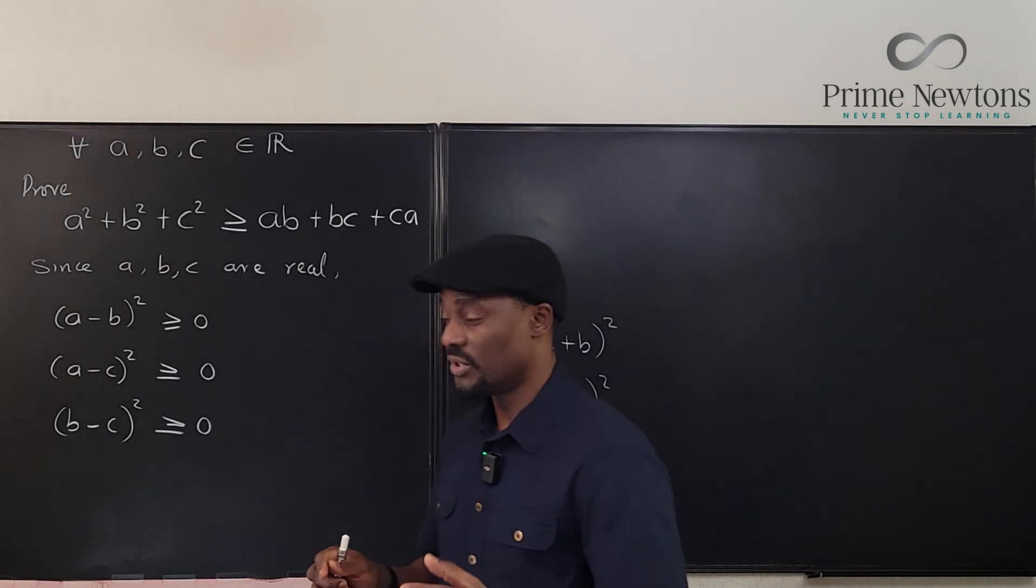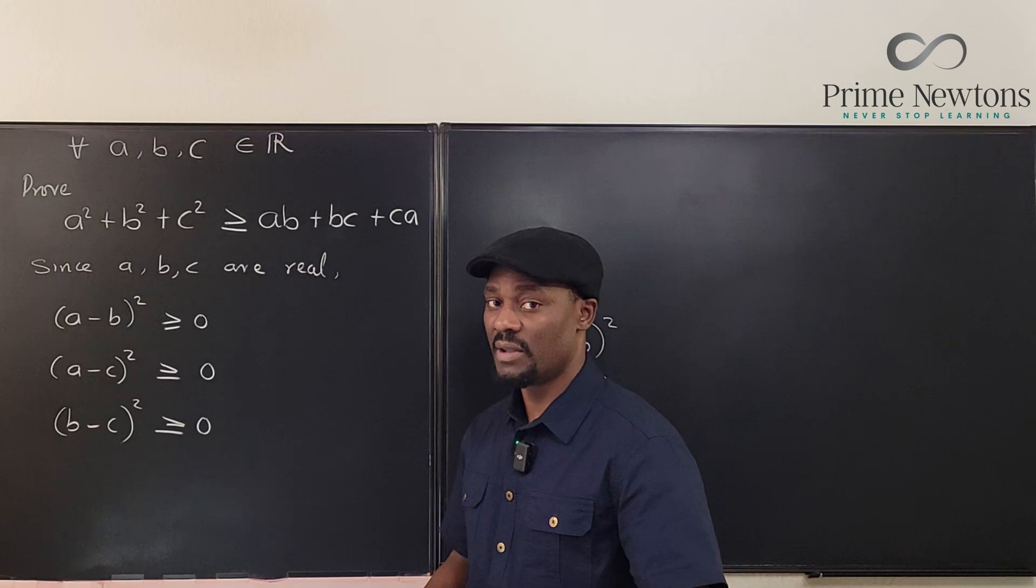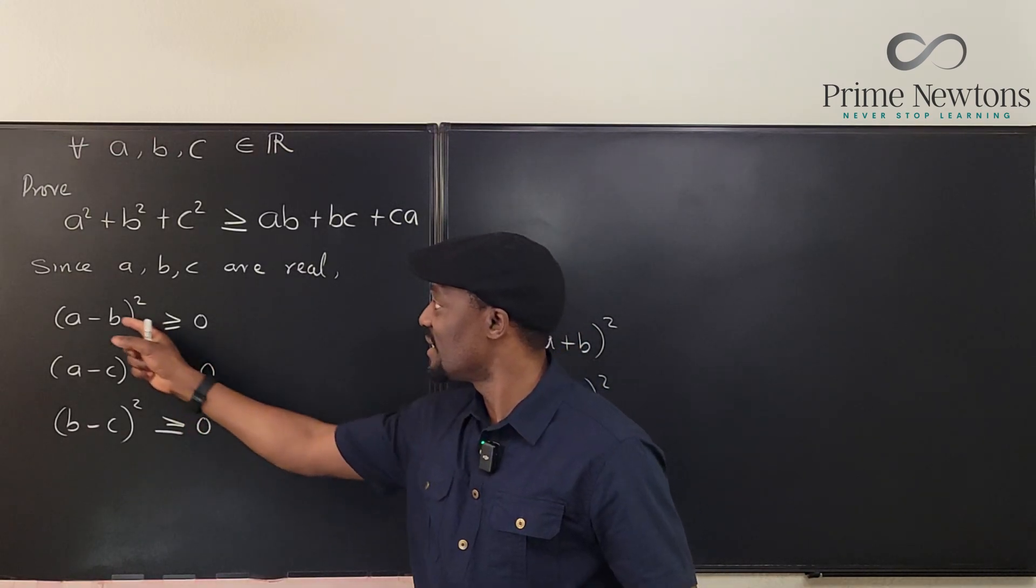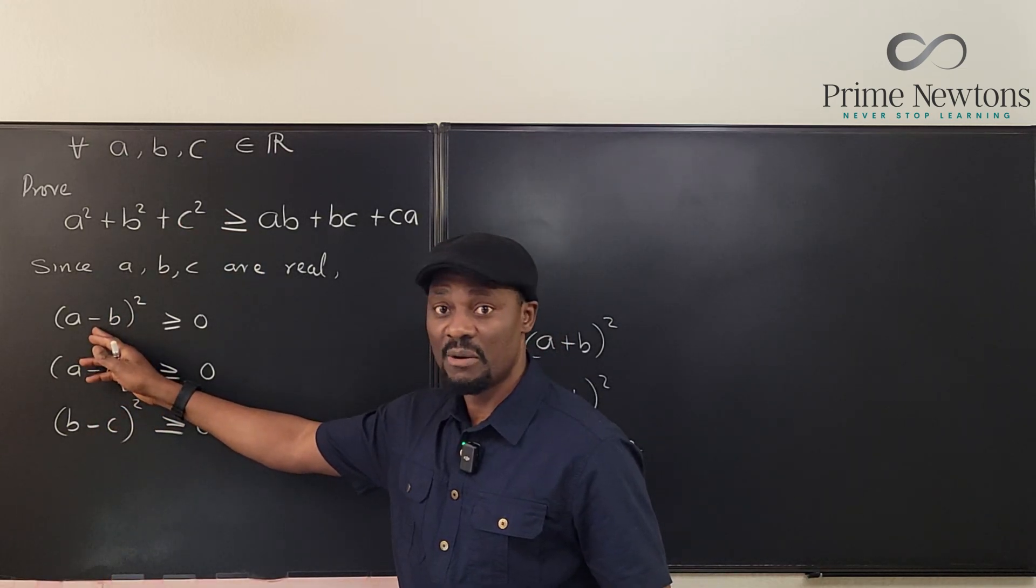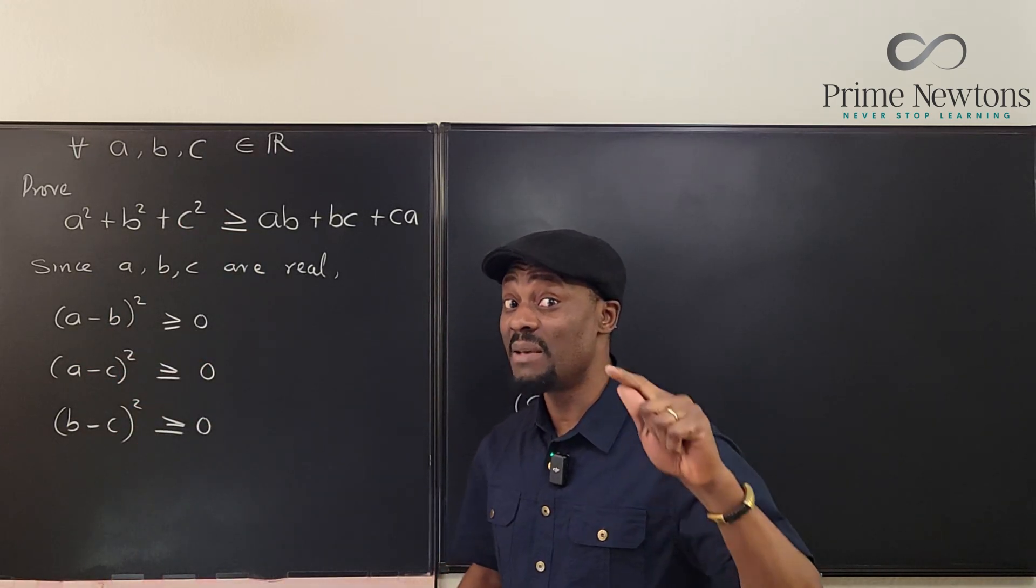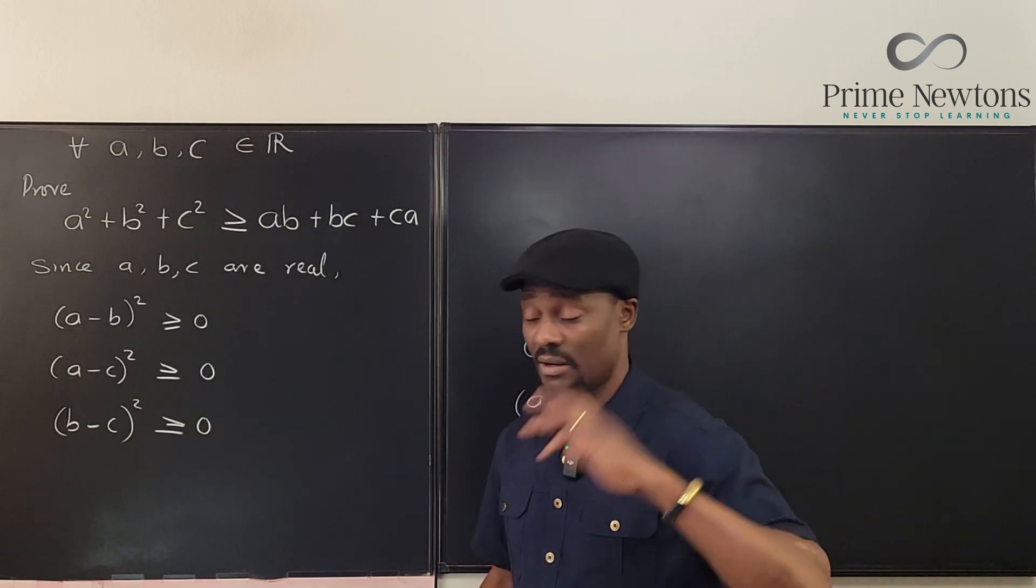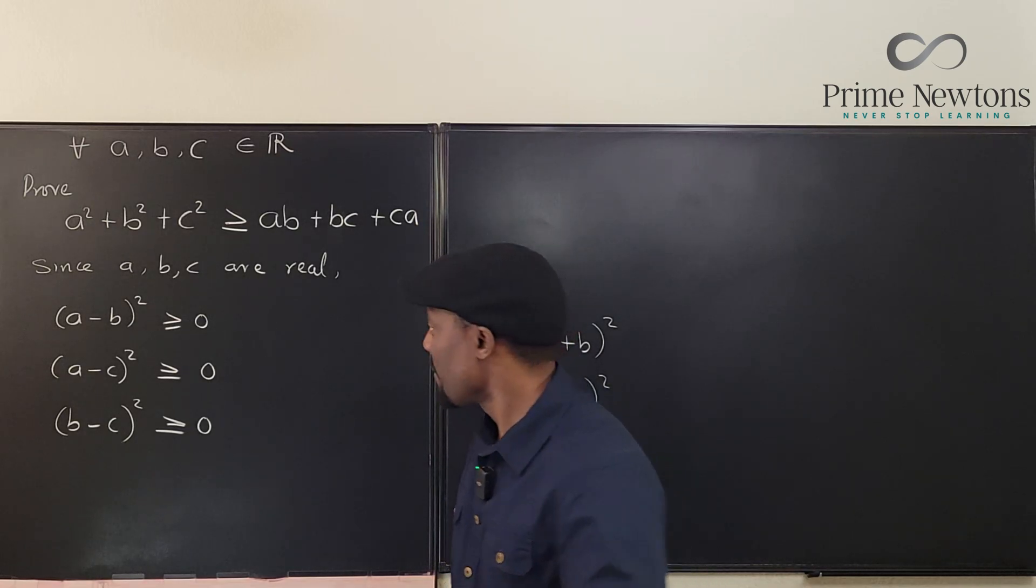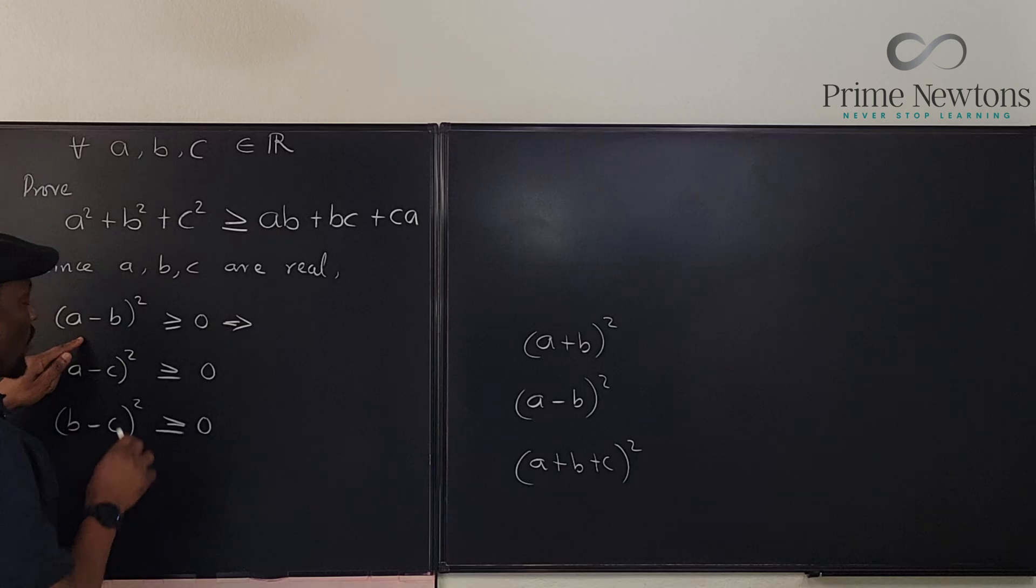So we know because they're real numbers, the square of any real number is positive. It's important for you to note that because if these are not real numbers, we can't make this claim because if you have an imaginary number, the square of an imaginary number may be negative or neither negative nor positive, depending on what kind of expression you get in the middle. So with that, this implies, what do we have here?